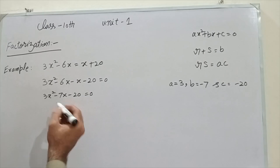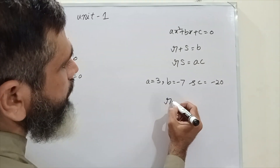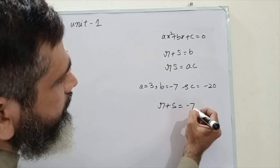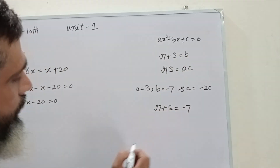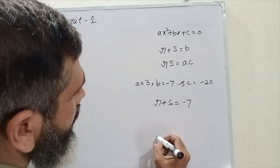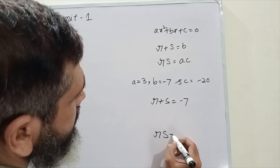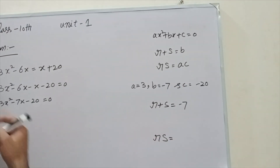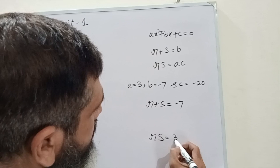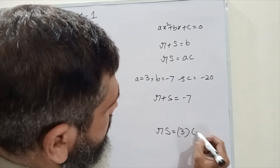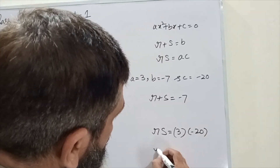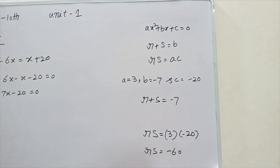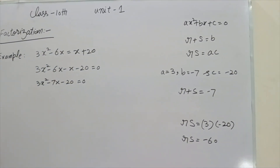Now, r plus s must equal b, which is minus 7. And rs must equal a times c. Here a is 3 and c is minus 20, so rs should equal minus 60.